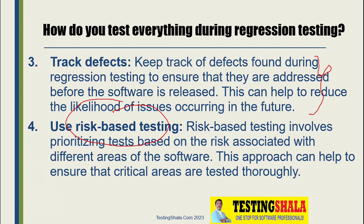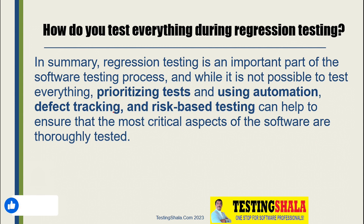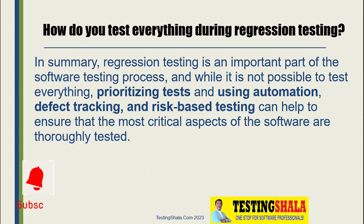In summary, we should do regression testing by prioritizing test cases, bringing in automation, analyzing your defect pool, and applying a risk-based testing approach. This ensures that we can cover as much as possible in our regression testing coverage, guaranteeing that at least the critical aspects of the software are thoroughly tested and critical functionality is never broken after certain fixes or updates to your software.